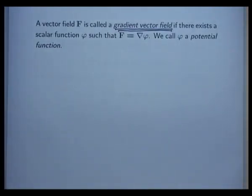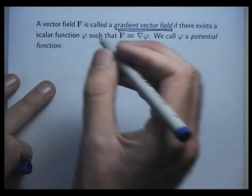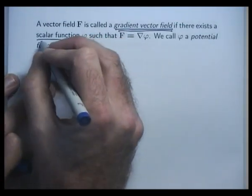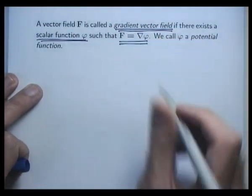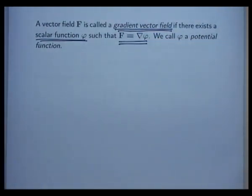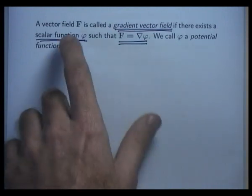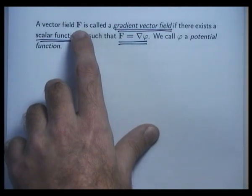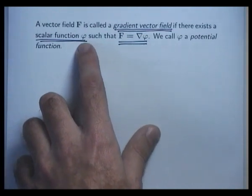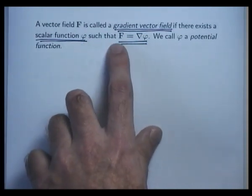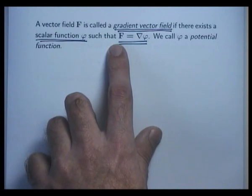We call a vector field a gradient field or gradient vector field if there exists a scalar field phi such that the gradient of phi equals the vector field F. So usually F is a given vector field, and it's up to you to produce some scalar field phi such that grad phi equals F. That's the basic idea.